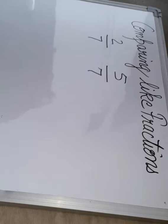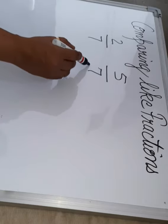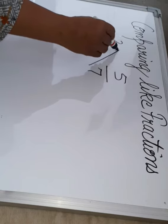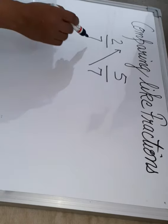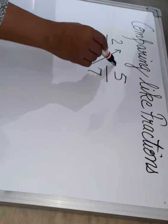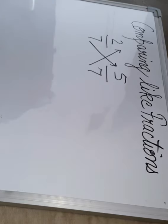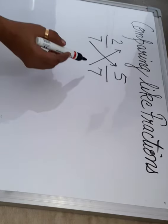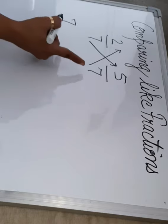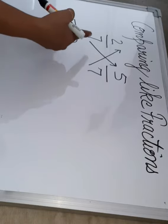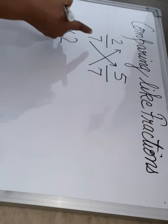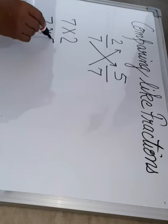So I am going to use here cross multiplication method. Denominator multiplied by the opposite numerator. Denominator multiplied by the opposite numerator. So 7 multiplied by 2 and 7 multiplied by 5.